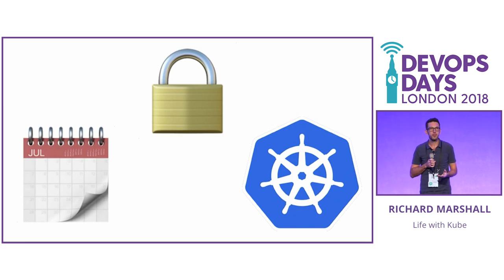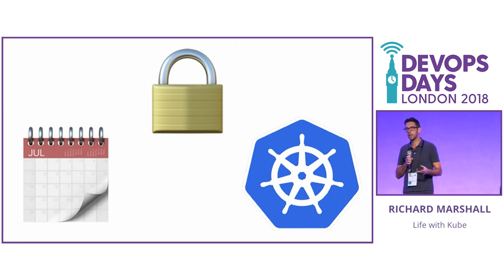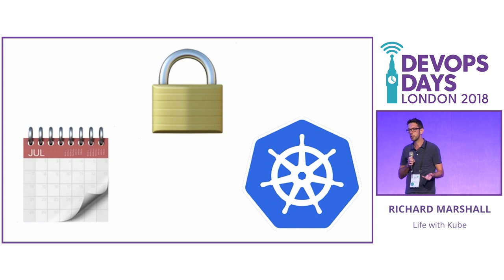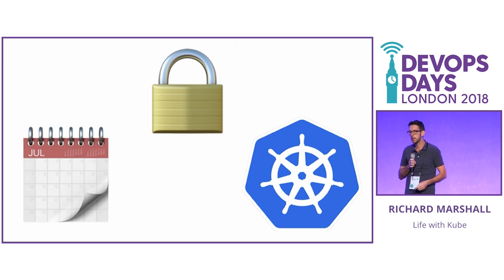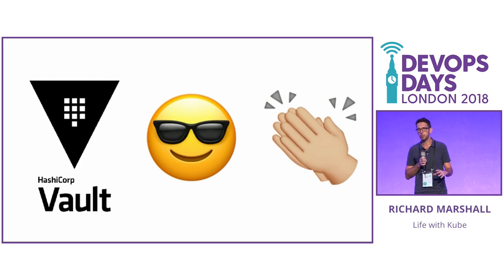Security in Kube — there are loads of features around security in Kubernetes, and I'd recommend using as many as you can from day one. There are things like container runtime isolation, network isolation, and RBAC. We left a lot of those till the end, so it was a real problem for us.